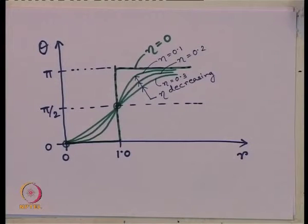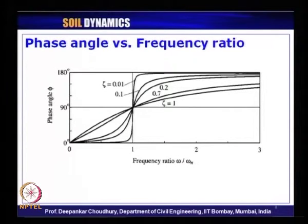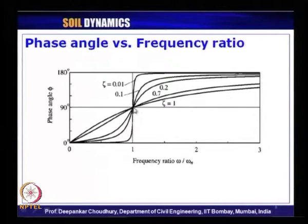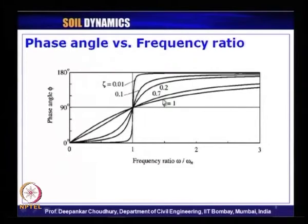The curves are in the order of decreasing eta — it can be eta 0.1, 0.2, 0.3, and so on. So that is the way the phase is varying with respect to the frequency ratio r. Now the same thing I have just explained — let us look back at the slides. The DMF variation we have seen already; this is the variation of phase angle with respect to frequency ratio, as I have explained, showing 0 degrees, 90 degrees, and 180 degrees.